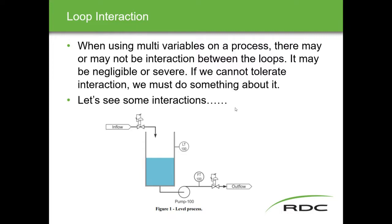First we're going to look at what loop interaction is and get a practical example. When using multi-variable on a process, there may or may not be interaction between the loops — it might be negligible or it might be severe. If we can't tolerate interaction we have to do something about it, and that's why we come up with multi-variable schemes. Looking at what an interaction looks like between loops, we have a very simple level process.